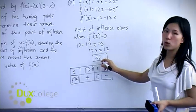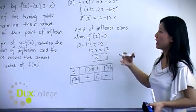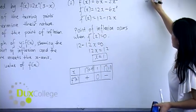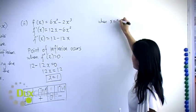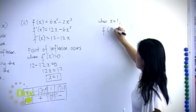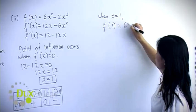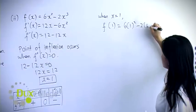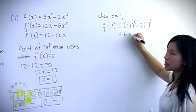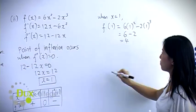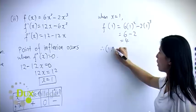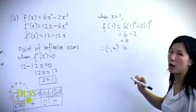Now, that's just the x-coordinate. So what you need to do now is find the y-coordinate. So when x = 1, f(1) = 6 - 2, which is equal to 4. So therefore, (1,4) is a point of inflection.